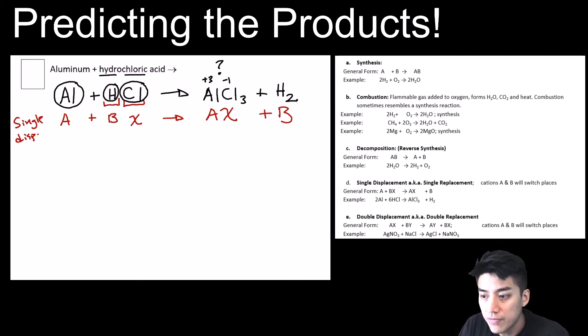Okay, now that you're confident in predicting the products, you can then try balancing this equation. But make sure your predictions are correct. Otherwise, you're going to end up with some dead ends, and you're going to be sitting there and you can't balance the equation.